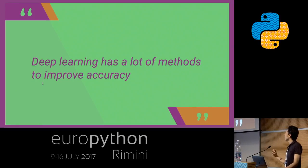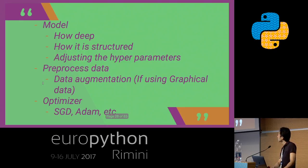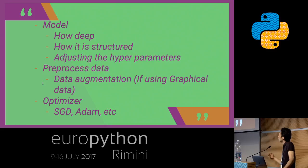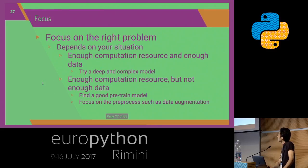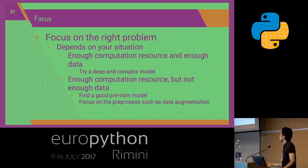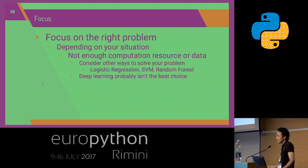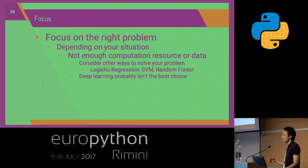Focus. Deep learning has many methods to improve accuracy: the model architecture (how deep, what structure), adjusting hyperparameters, pre-processing data, data augmentation for graphical data, and optimizer choice such as SGD. Depending on your situation — if you have enough computational resources and data, try a deep and complex model. If you have enough compute but not enough data, find a good pre-trained model and focus on pre-processing such as data augmentation. If you have neither enough compute nor data, consider simpler methods such as logistic regression, SVM, or random forest — deep learning is probably not the best choice.